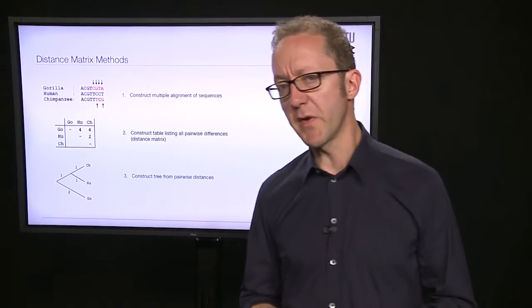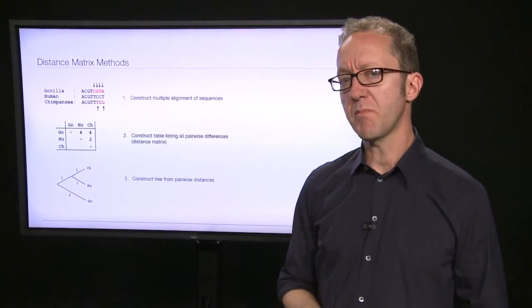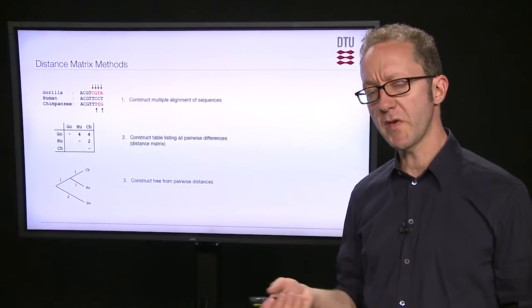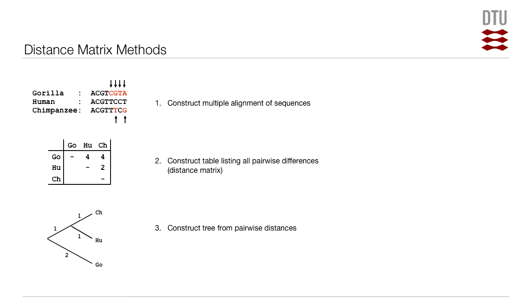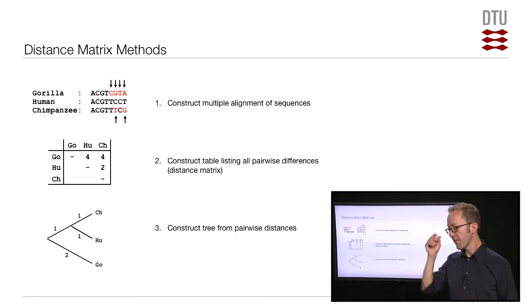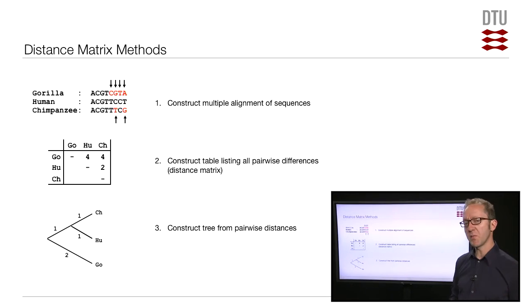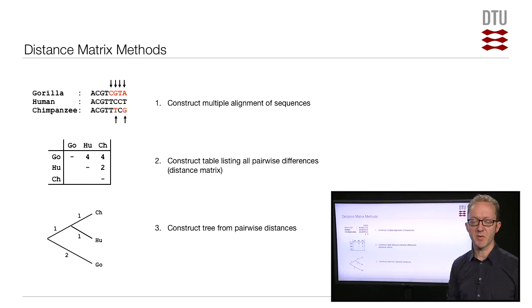What is a distance matrix? The idea in distance-based methods is, as always in phylogeny reconstruction — in molecular evolution at least — that you start out with a multiple alignment of sequences. I've shown a small example here with just three. From the multiple alignment of sequences, the idea is that you should count what we call the genetic distances between each pair of sequences.